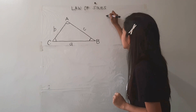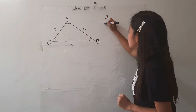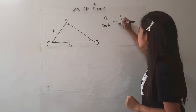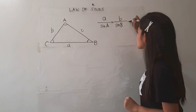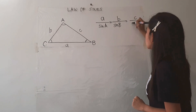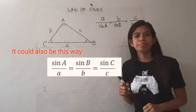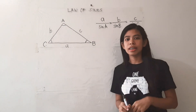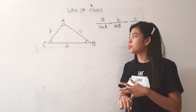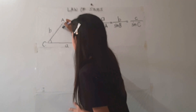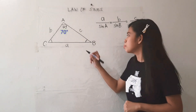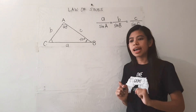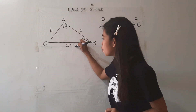The Law of Sines states that side a over sine of angle A equals side b over sine of angle B, which is also equal to side c over sine of angle C. So how are we going to apply this if we were asked to solve for the angles and sides of an oblique triangle? Let's take this as an example: angle A measures 70 degrees and angle B measures 45 degrees, and you are given side a which measures 40 units.